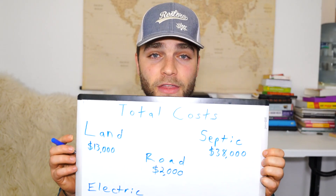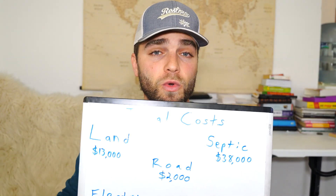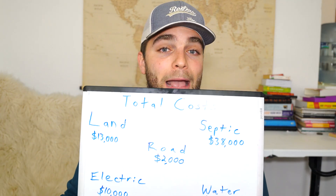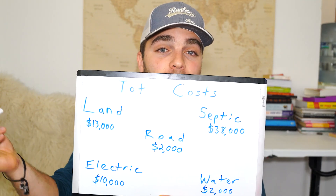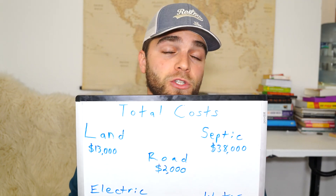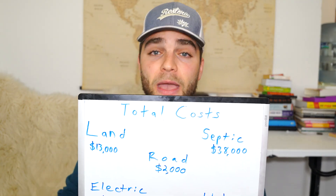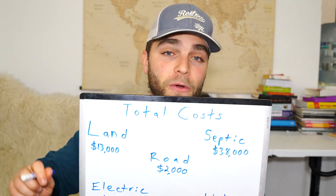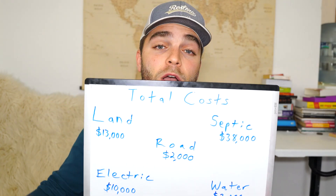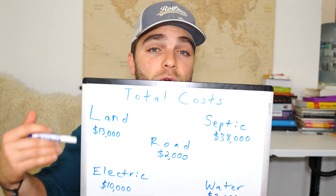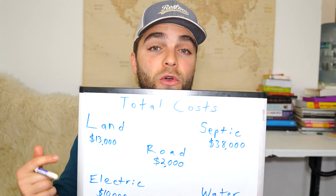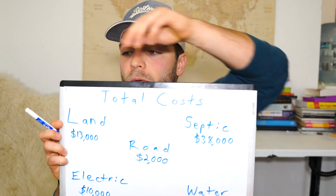These are my total costs — I'm going to go through each individual part of infrastructure one by one. The first major part is obviously the land. I bought my land with a $13,000 down payment; the market price was $85,000. I did what's called owner financing, which means you put a down payment followed by monthly payments — no bank involved, just between the seller and buyer. I now pay $620 a month, and that gave me access to the land right away.